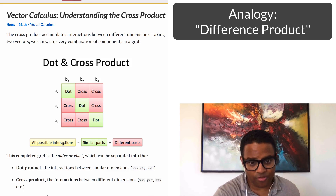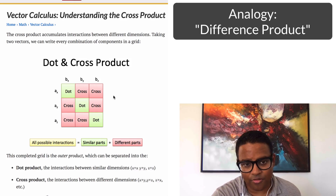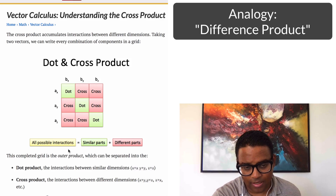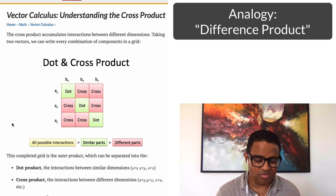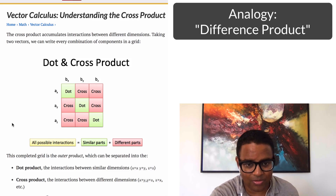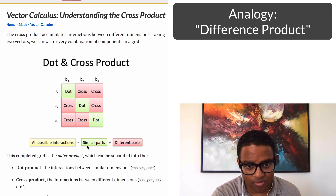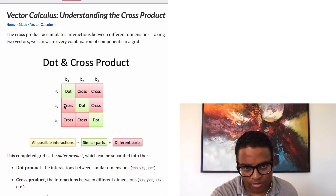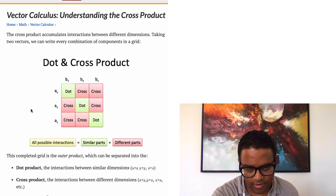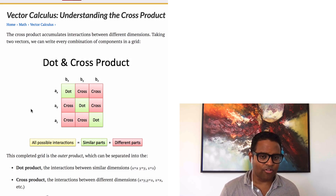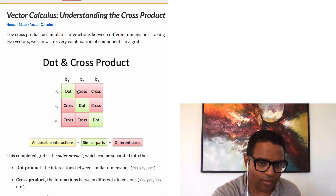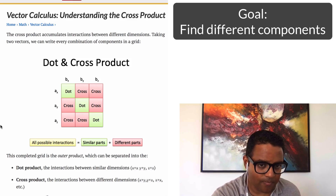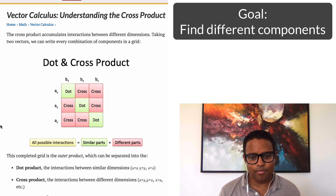We have all the similar parts and all the different parts contained in this grid. They're connected to the entire vector by the Pythagorean theorem, but intuitively: the similar parts plus the different parts equals all the parts, because a part is either one or the other. So the cross product is saying what things are not in common — we just want to add all of that up.